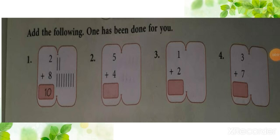Add the following — 1 has been done for you. In this question, you have to add vertically. First is 2 plus 8. Draw 2 lines behind 2 and 8 lines behind 8, then count all the lines. Total lines are 10. Answer is 10.